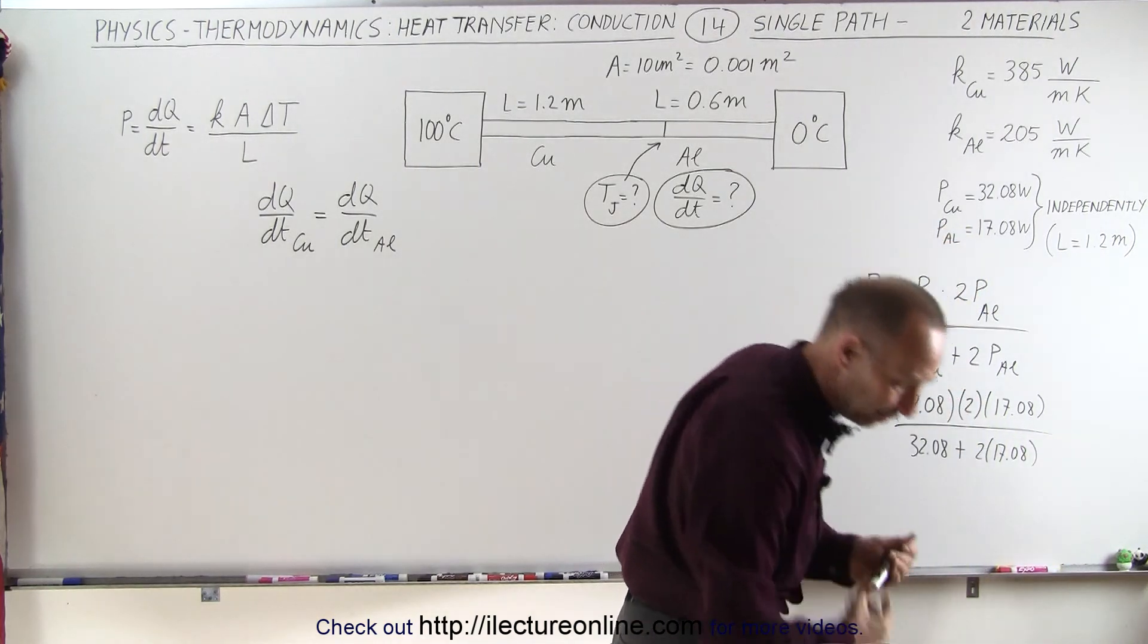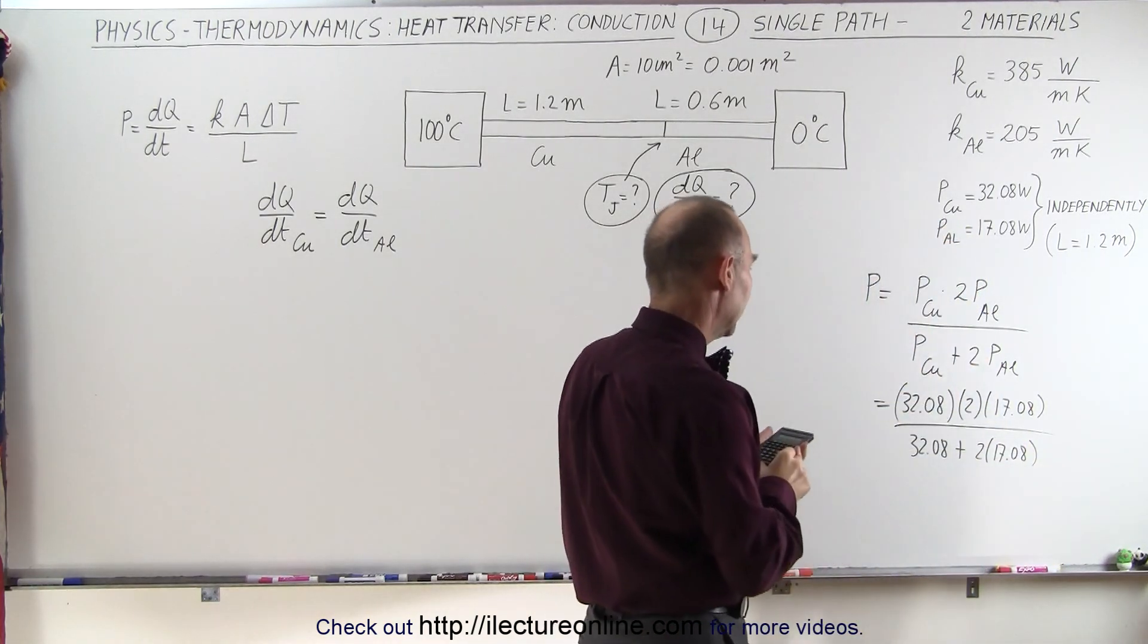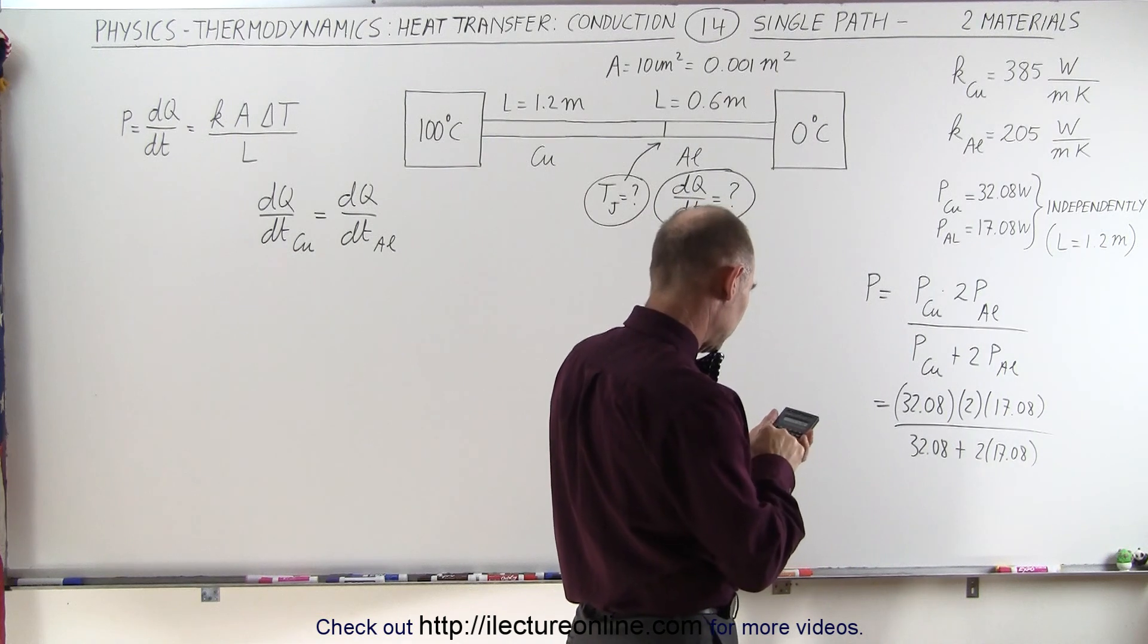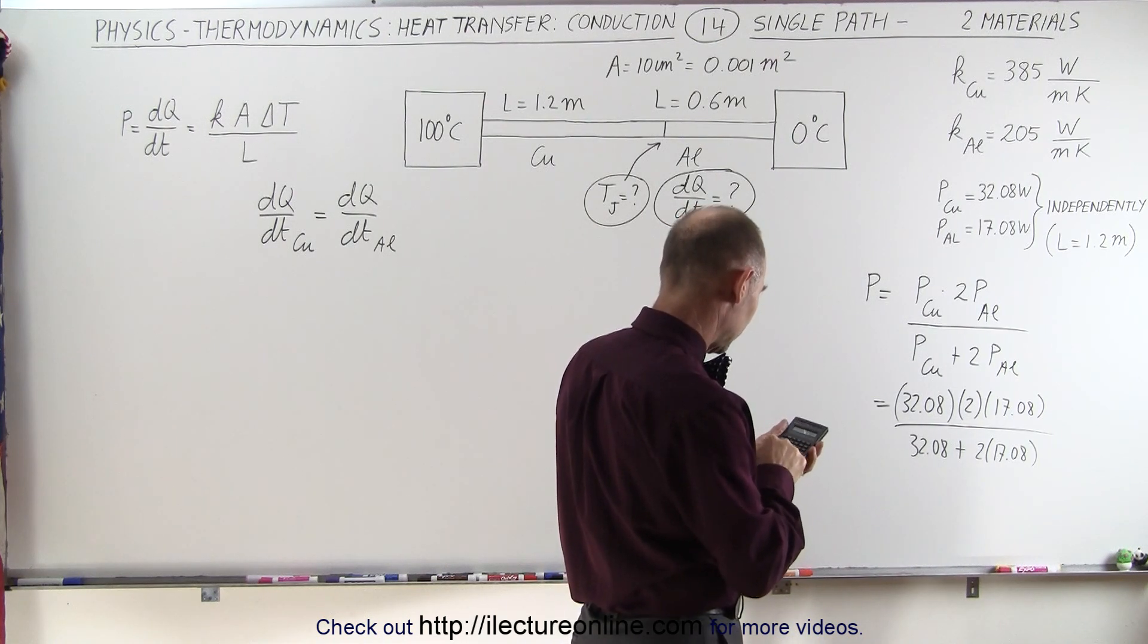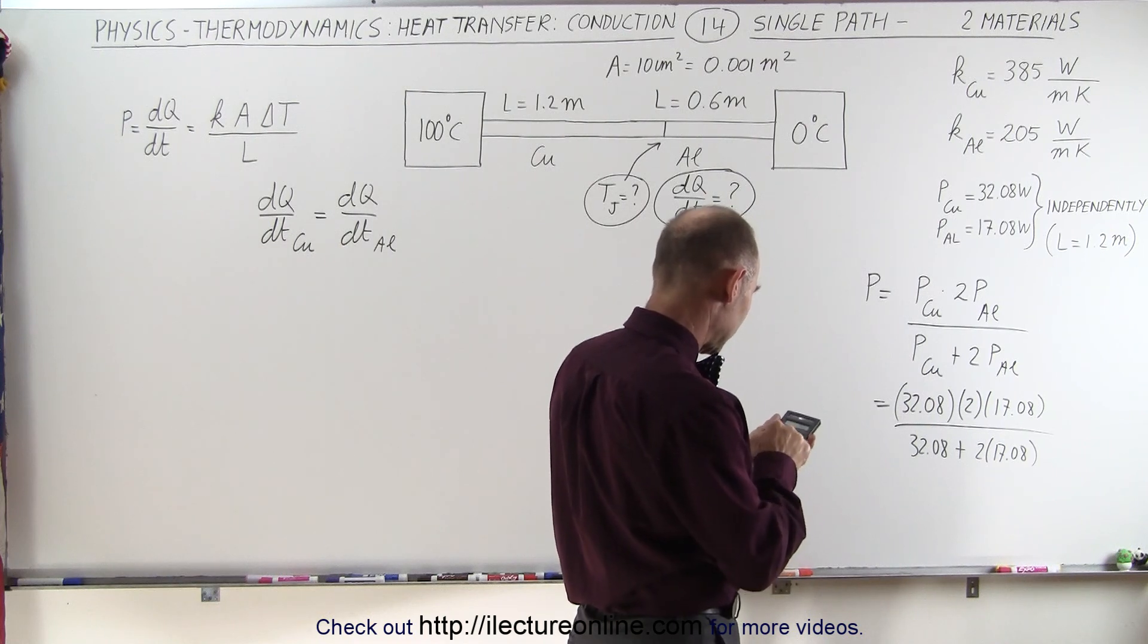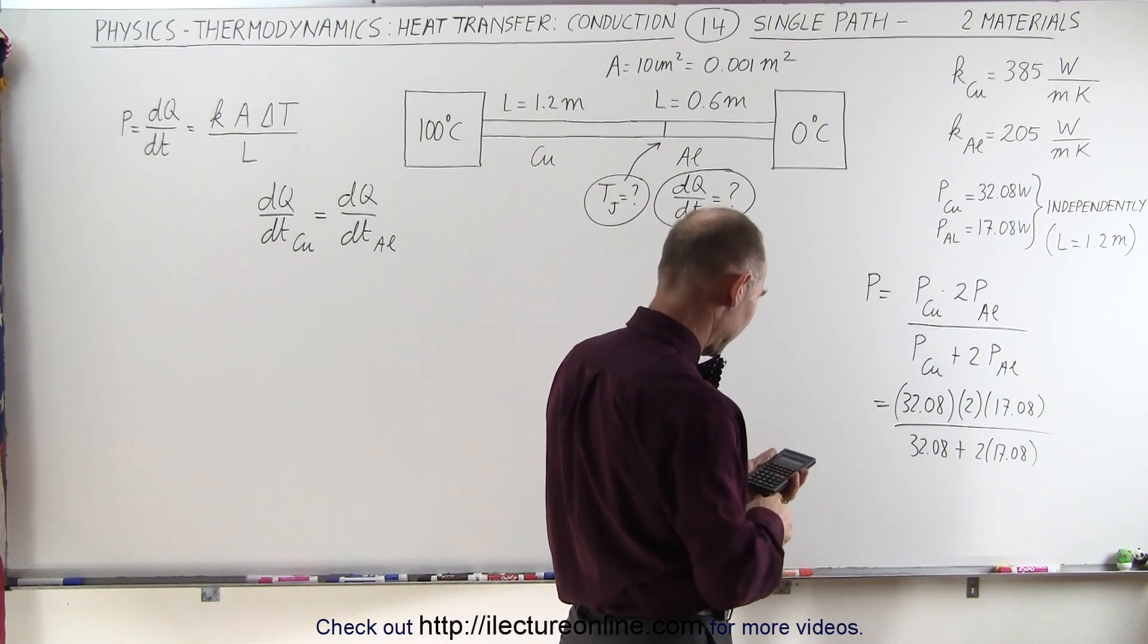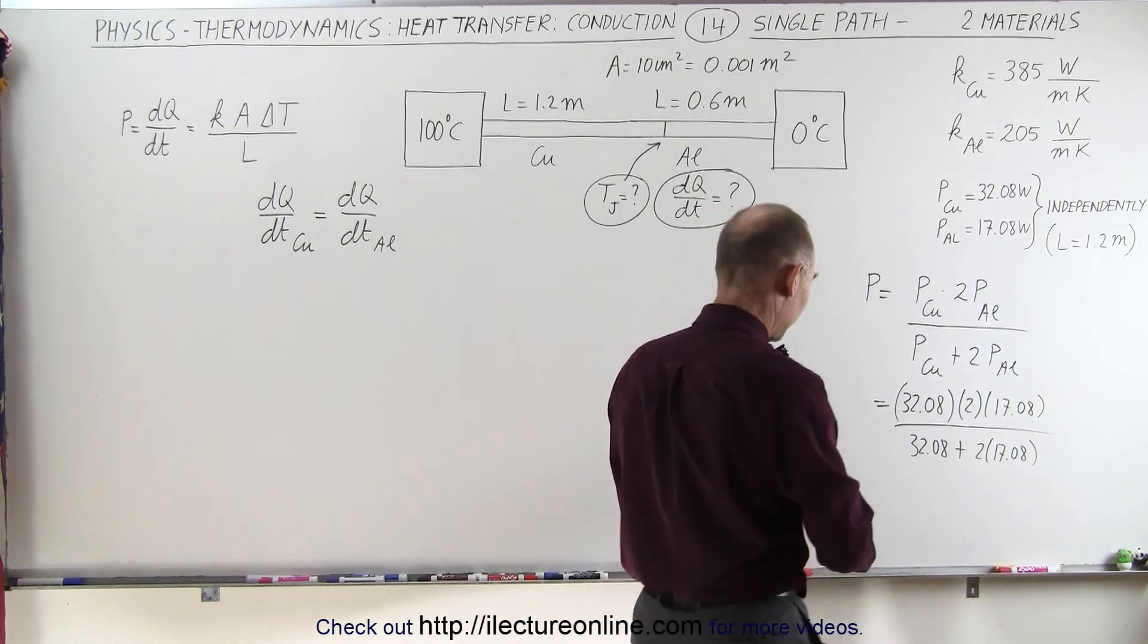And let's see what we get. So we have 32.08 times 2 times 17.08, that's the numerator divided by 32.08 plus 2 times 17.08 equals, and we get 16.54 watts.